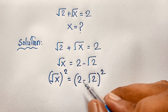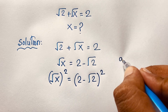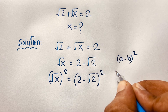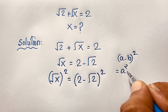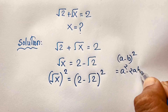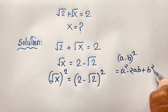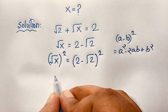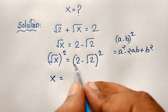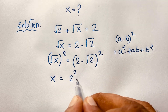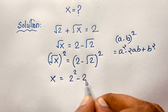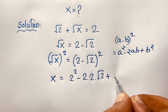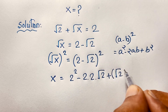Now I apply this math formula: (a minus b)² equals a² minus 2ab plus b². Applying this formula here, the square root on the left cancels, giving: x equals 2² minus 2 times 2 times square root 2 plus (square root 2)².